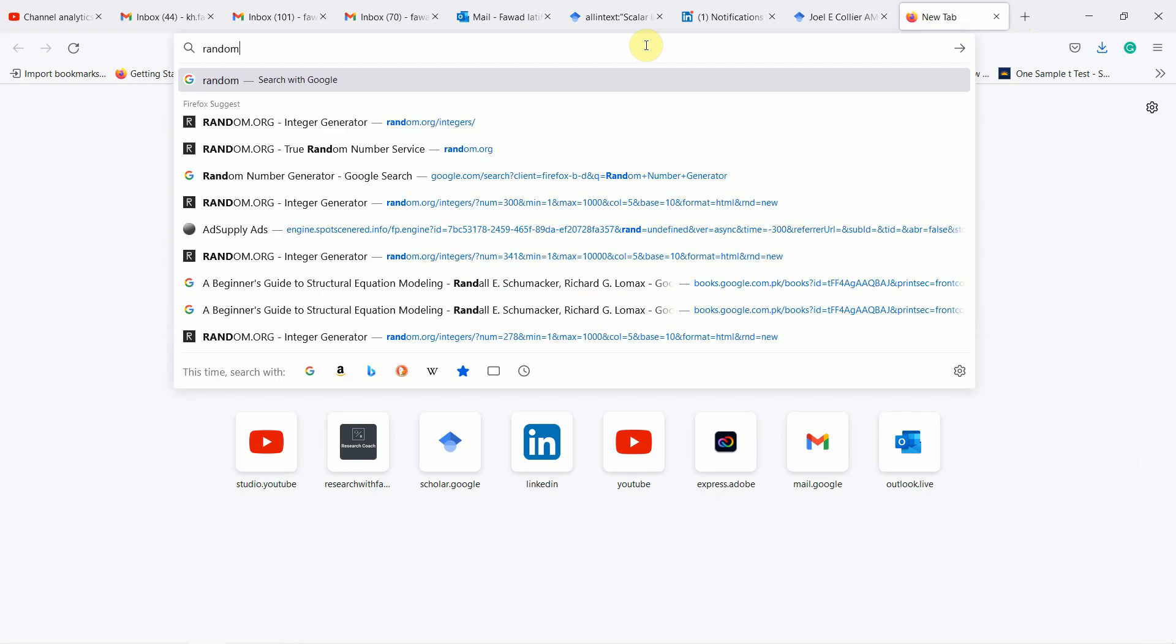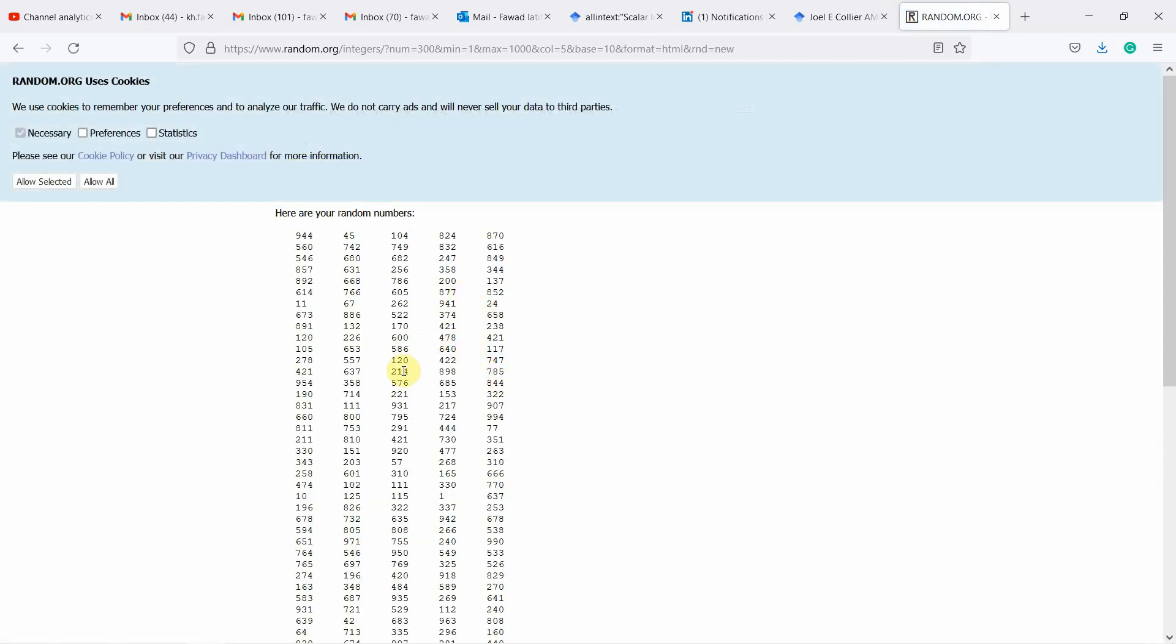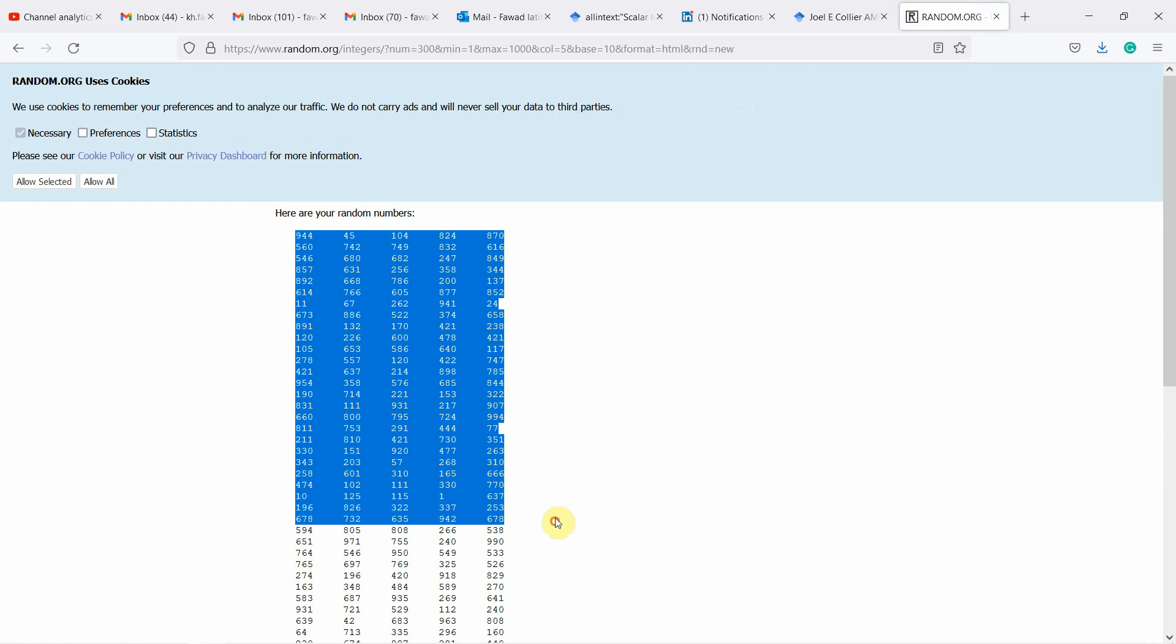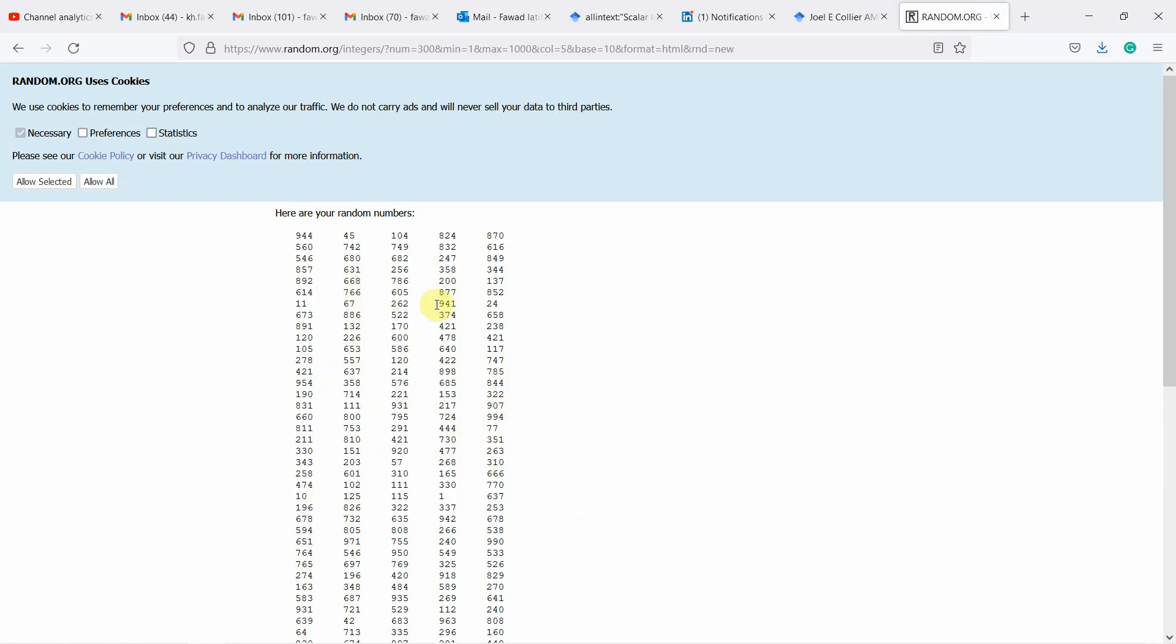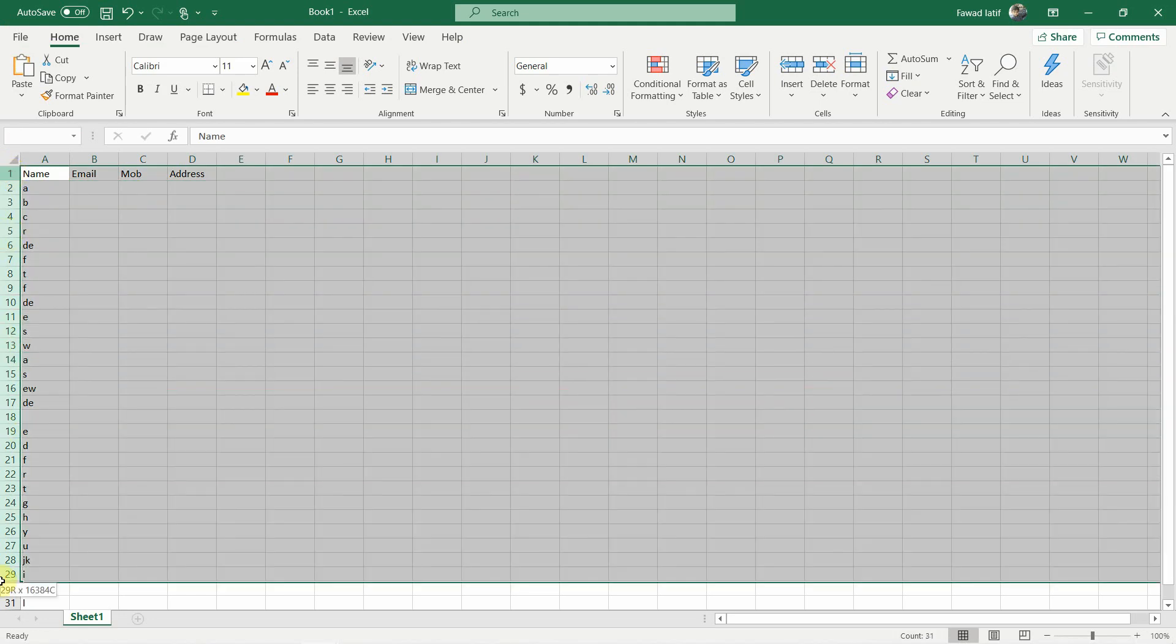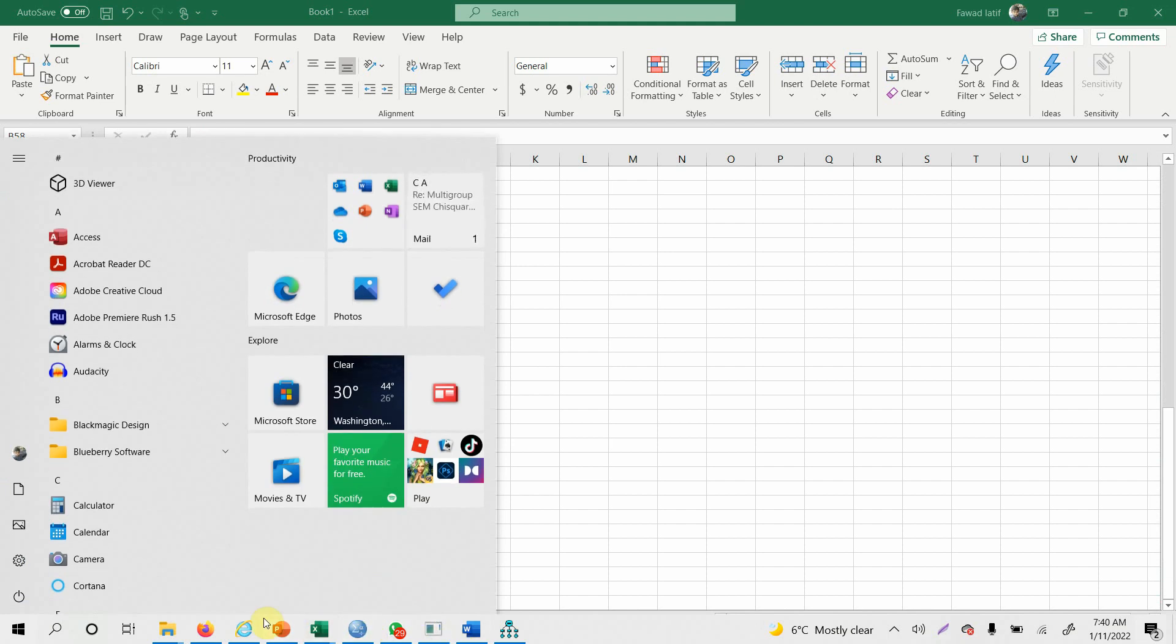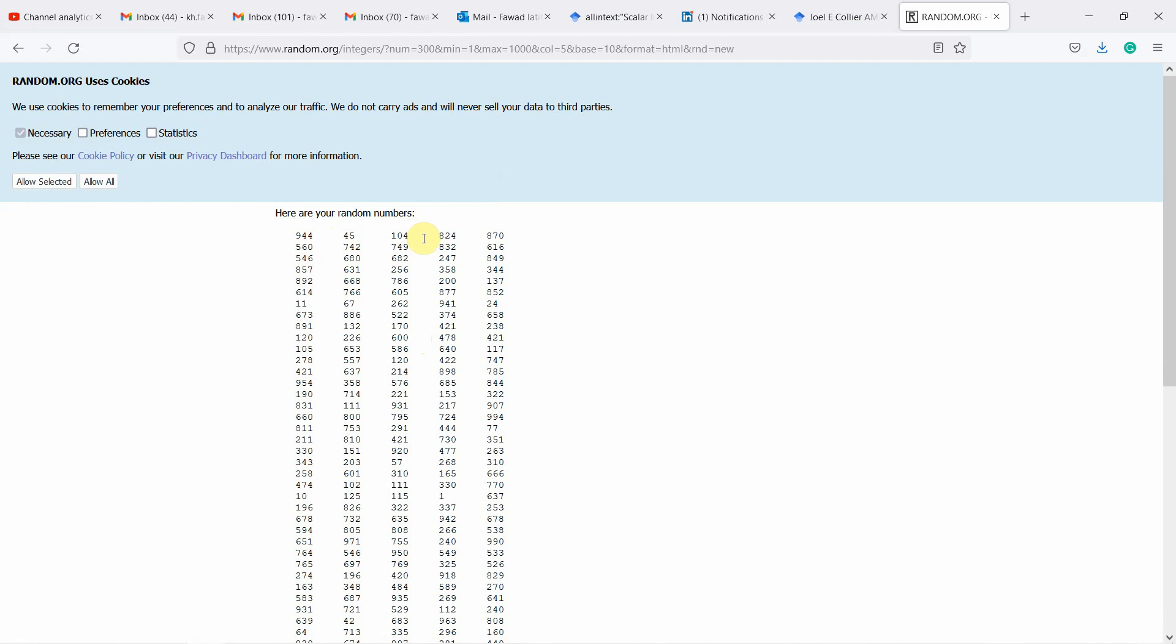In order to get the random numbers I'm going to use a random number generator. This is the website random.org/integers. Let's say I want to generate 300 random numbers and they should be between 1 to 1000. And let's say let's get this format. Let's get numbers. So I've got my list in Excel. And here are the numbers that I will select from my Excel sheet. These numbers are randomly generated. Let's assume I've got my Excel sheet here. And let's say these are my project managers up until 1000. So which one will I select? I've already got my numbers here. So I will select 944, 45, 104, 824, 870, whatever the numbers are from that Excel sheet. So this is how you do simple random sampling.